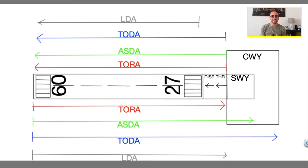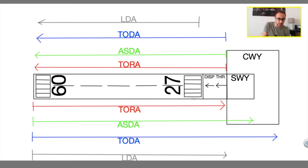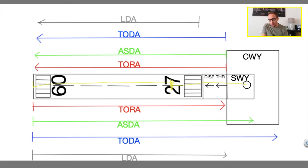The Accelerated Stop Distance Available is the distance you have available for the takeoff run all the way to V1, and then to stop the aircraft in case of a rejected takeoff. Let's say you are taking off runway 09 — you arrive at V1, you have a problem, you reject the takeoff, and you can use all of this runway all the way down to the end of the stopway to stop your aircraft. If you don't know what V1 is, I made a separate video linked in the description below.